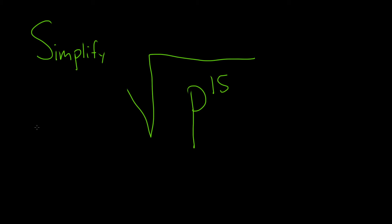In this problem, we want to take the square root of p to the 15th and simplify it. Because we're trying to take the square root, we need to take this p to the 15th and write it as something squared.